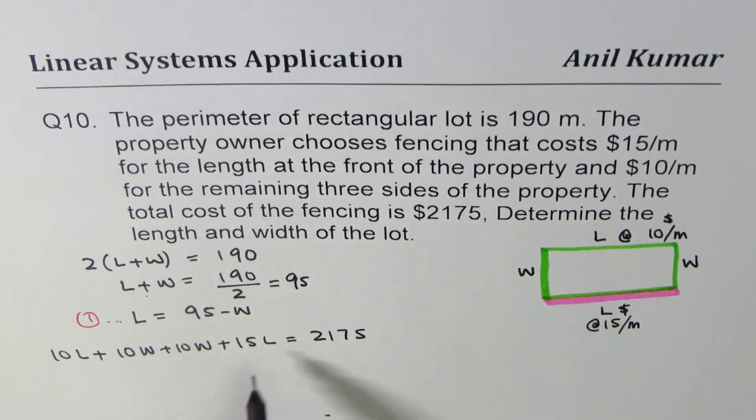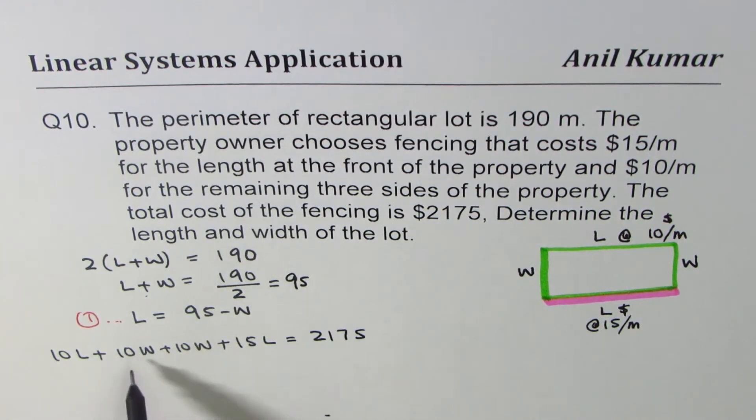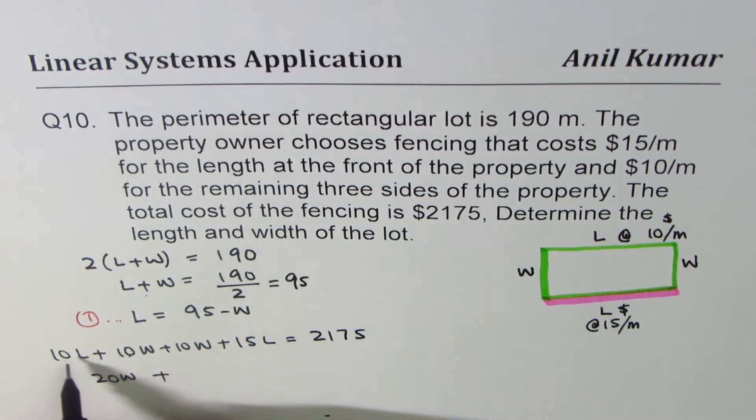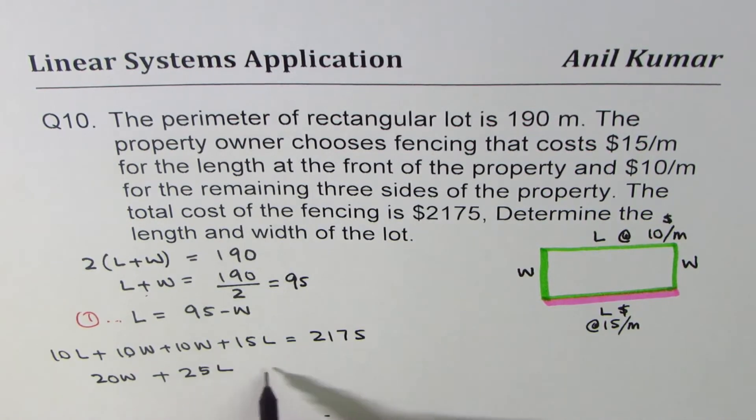Now we have two different variables. It's a good practice to write in one variable. So let's combine these terms. 10 plus 10 is 20. So we have 20W plus 25L equals to 2175.